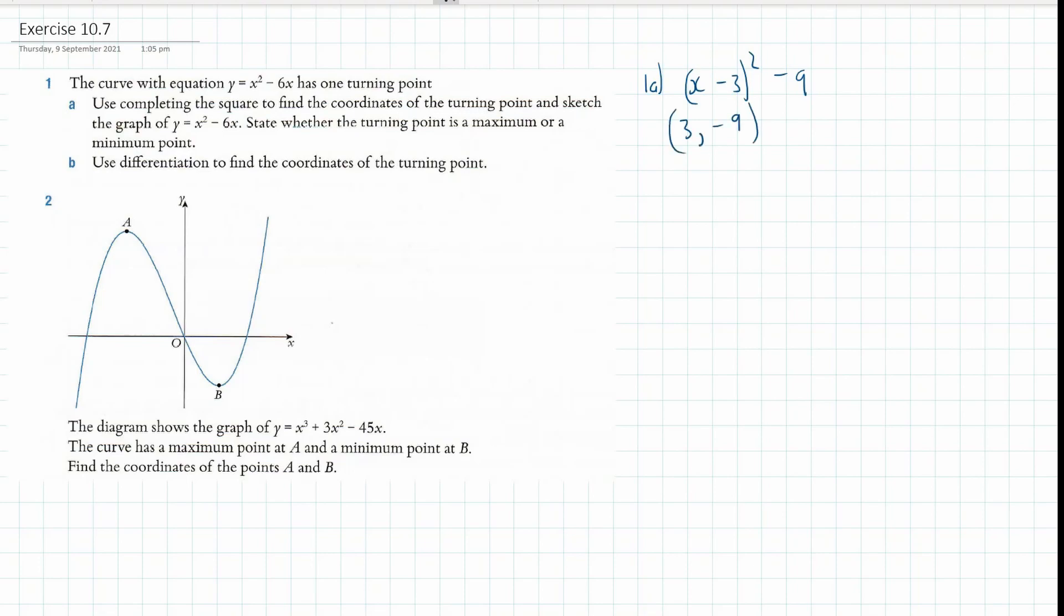Okay, now I can also use differentiation to find the minimum point. So, I can do dy dx, in this case it's going to be 2x minus 6, and I can say that the minimum point has a gradient of 0.